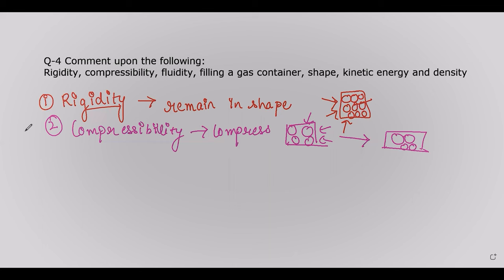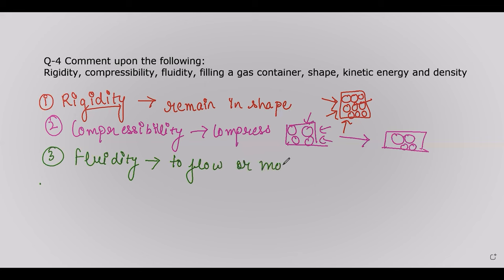Fluidity is the ability of a substance to flow or move. Solids do not have fluidity because they have very strong rigidity and high compressibility, so they cannot flow. However, liquids and gases both have the ability to flow and move.